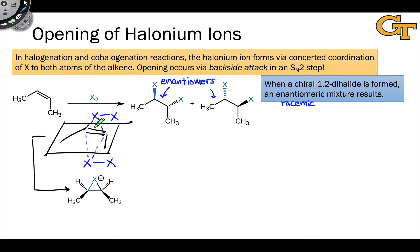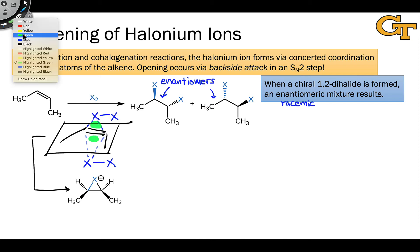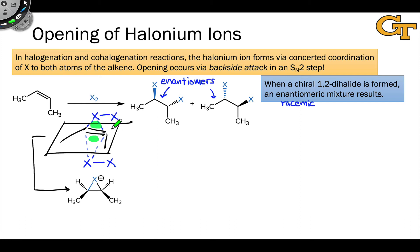Again, we can use stereotopic relationships to understand why this is. What we want to compare now is the region of space above the alkene to the region of space below the alkene. When we do that, we come to the conclusion that these two regions of space are homotopic.